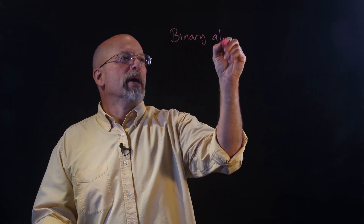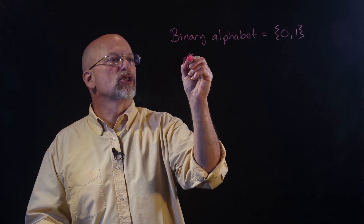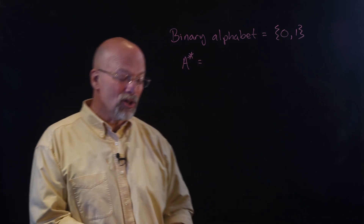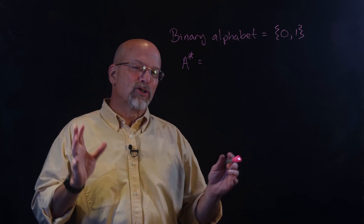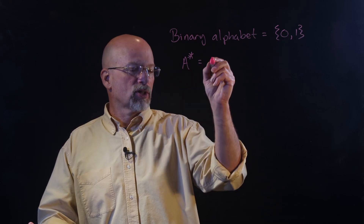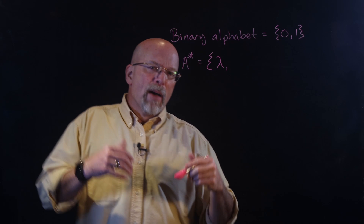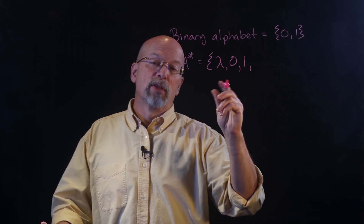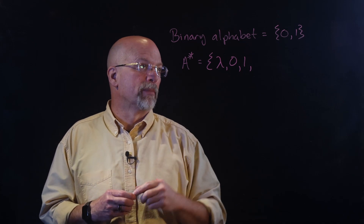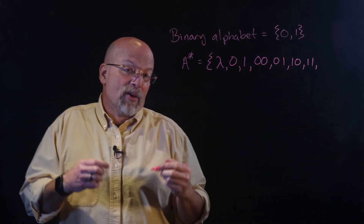Let's do some examples, starting with the binary alphabet {0, 1}. A-star — these sets are huge, containing a lot of elements, but no strings are of infinite length. The first element listed is the empty string: length zero, none of the characters. Then we build strings: '0' and '1' are the two strings of length 1. For length 2: 00, 01, 10, 11 — that's all of the ones of length 2.